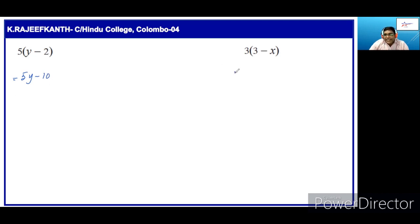Here, 3 times 3x minus 6. So first, we should multiply 3 by 3x. 3 by 3 is 9x. Minus 3 times 2 is 6.